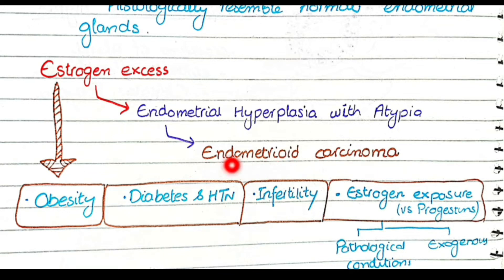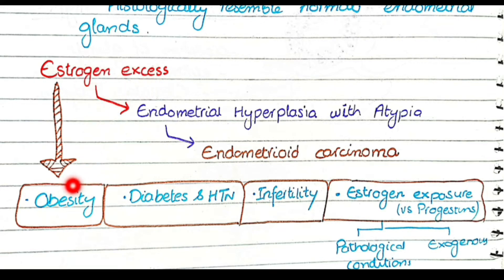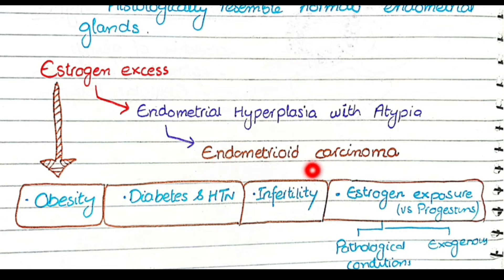Endometrioid carcinoma happens when there is estrogen excess. The factors that cause this include obesity: adipose tissue converts steroid precursors into estrogen, resulting in estrogen excess. Diabetes and hypertension usually coexist with obesity — together called metabolic syndrome — which can increase the risk of estrogen excess and endometrioid carcinoma.